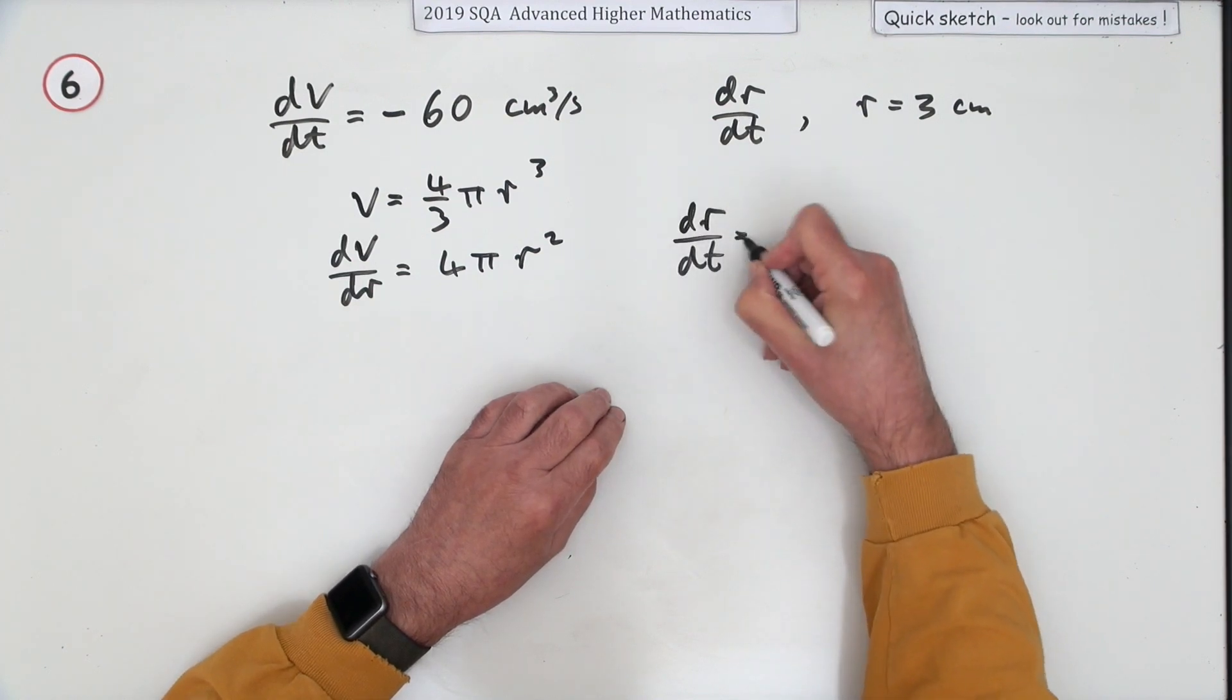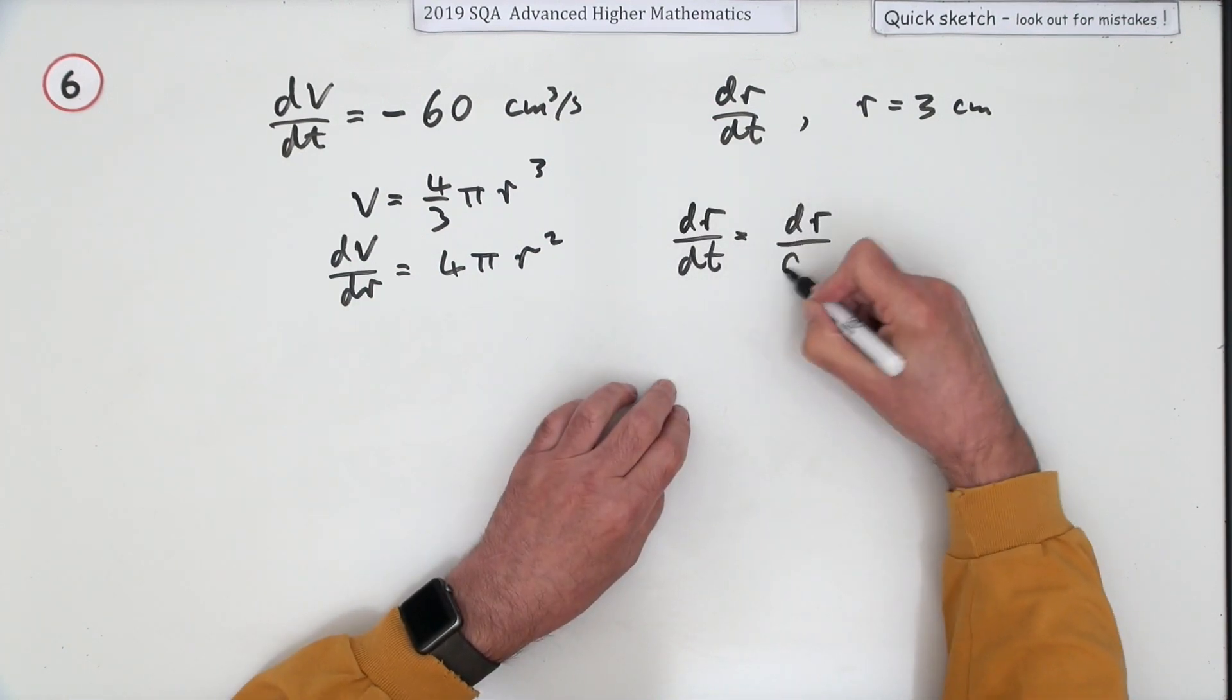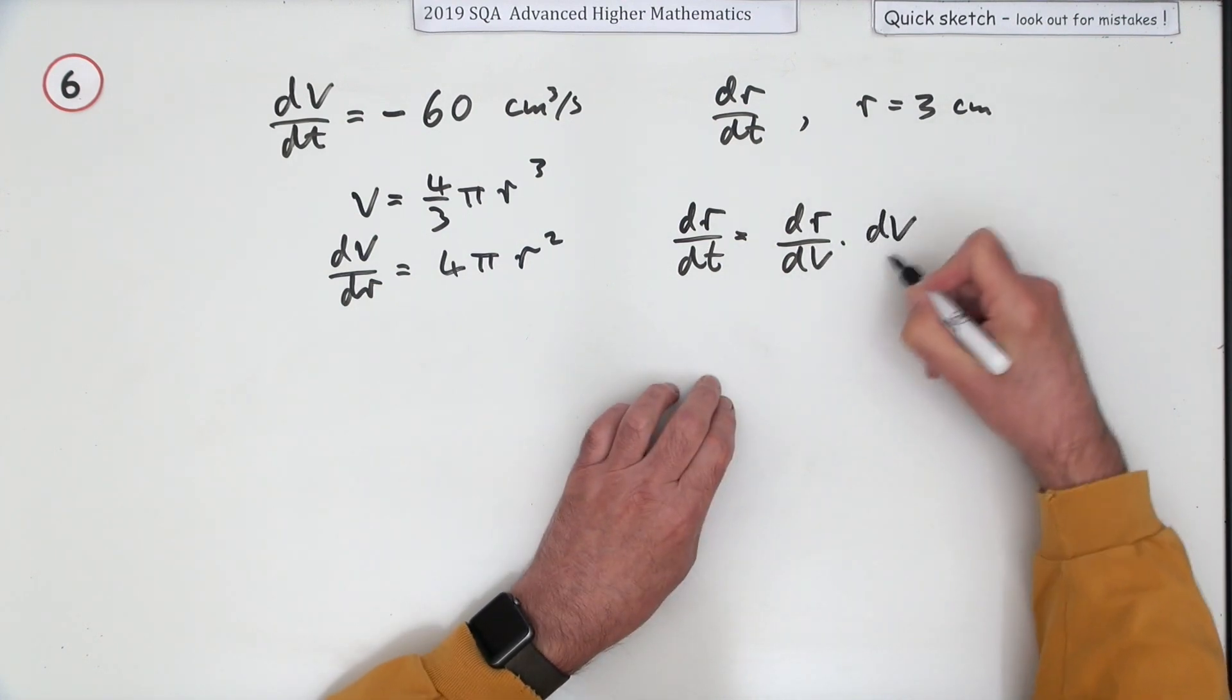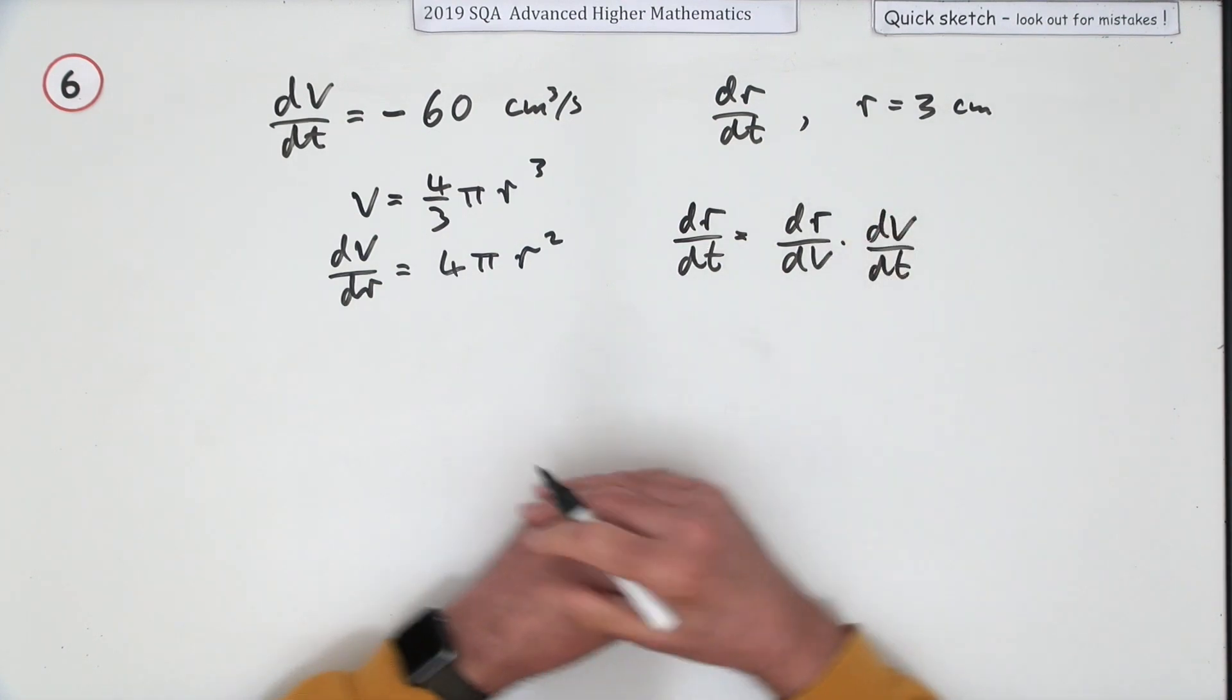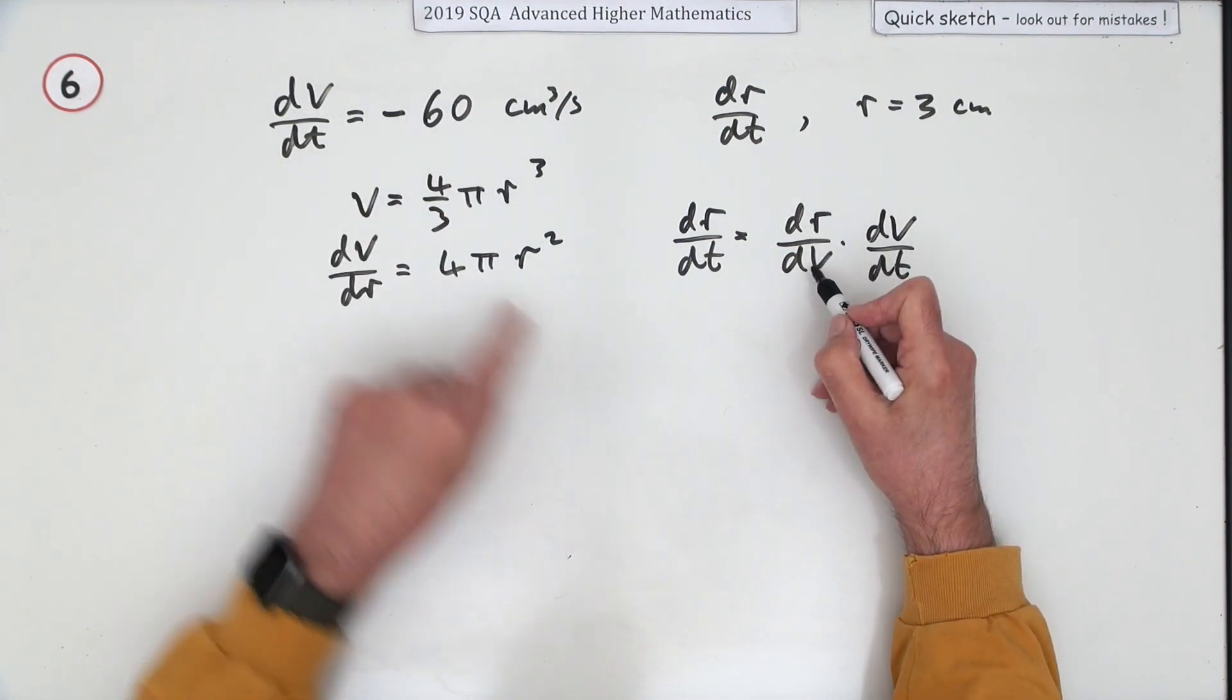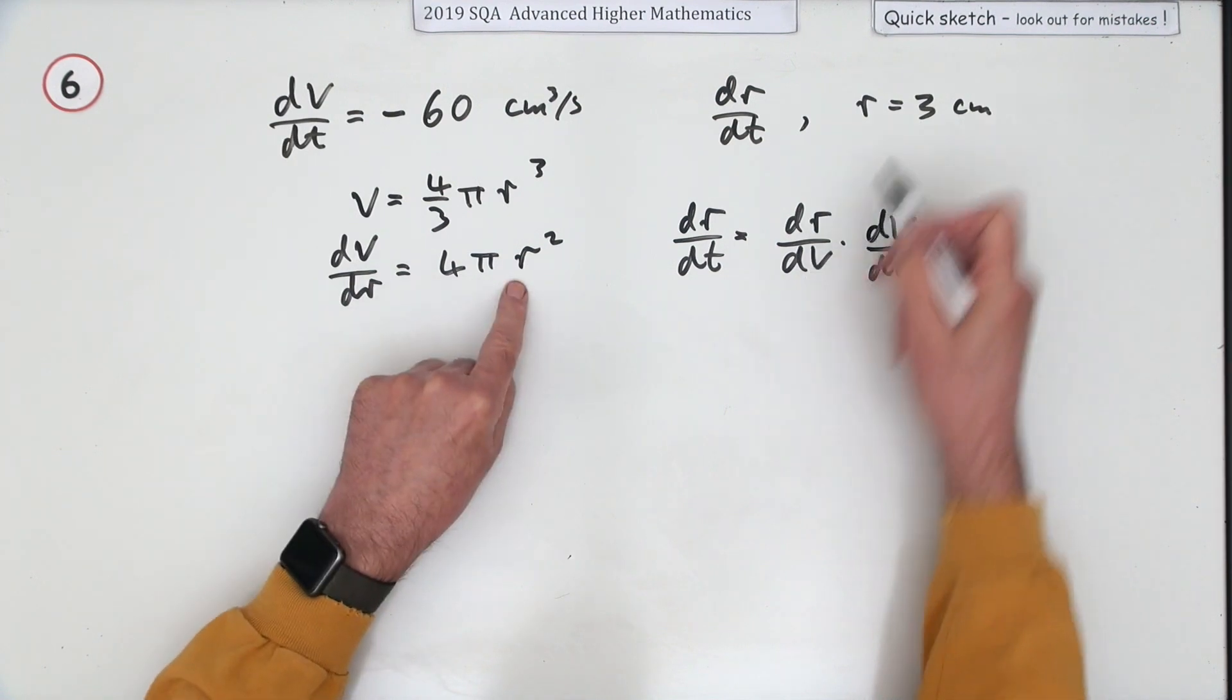Now you can construct that from this. I want dr/dt, but I can get dr/dv to link the derivatives to take me back to dr/dt. dV/dt is this negative 60, dr/dv is just this upside down, and you know the value of r.